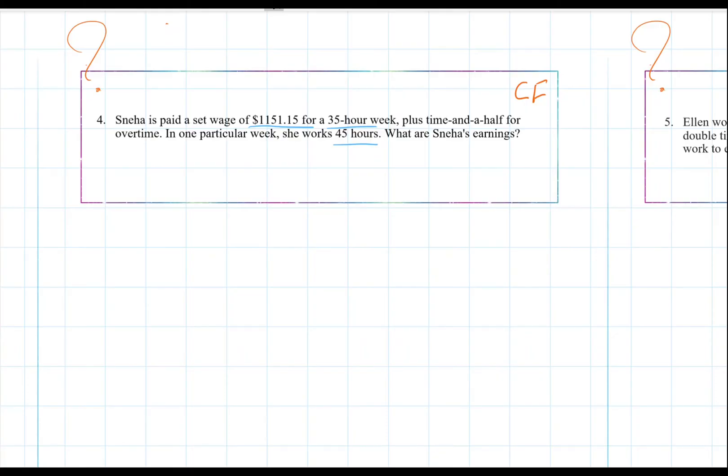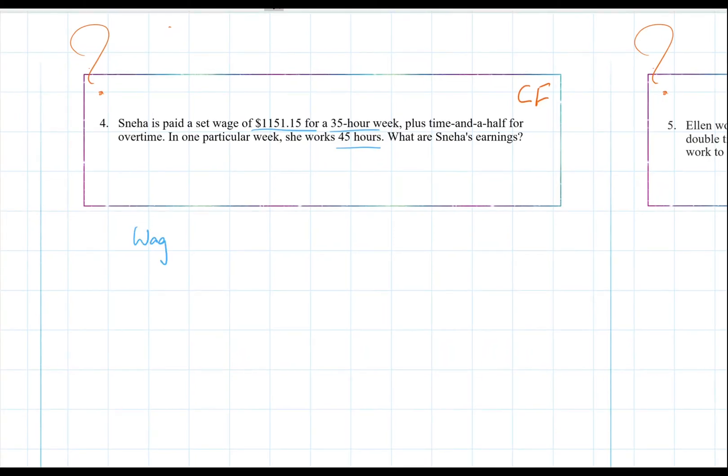So first we've got to figure out what is her hourly pay. And to do that, we can do her wage divided by how many hours she works. So in this case, that's $1,151.15 divided by 35, which is $32.89.